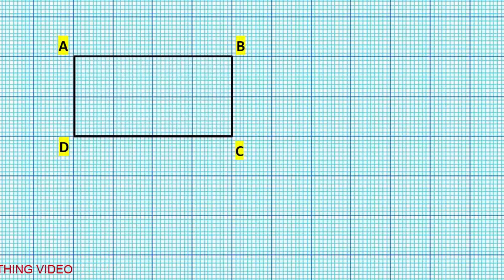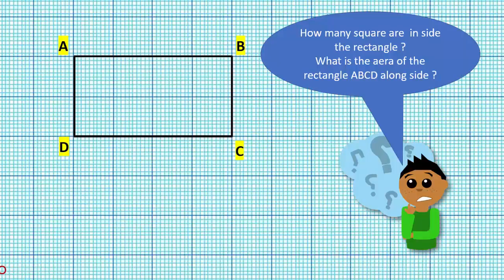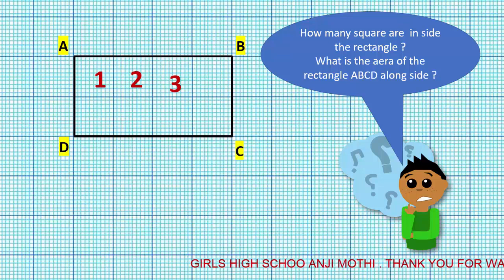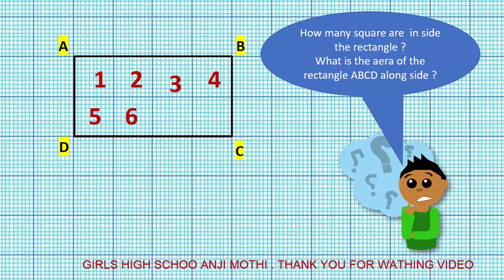How many squares are inside the rectangle? What is the area of rectangle ABCD? Let us count the squares inside the rectangle ABCD: one, two, three, four, five, six, seven...